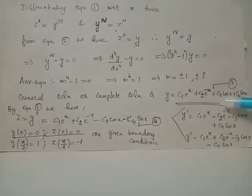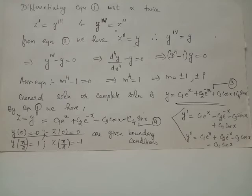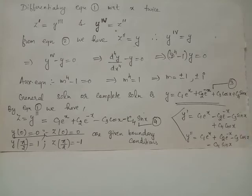From this expression of y, taking the derivative on both sides gives y dash equals c1 e raised to x minus c2 e raised to negative x minus c3 sin x plus c4 cos x. Differentiating again gives y double dash equals c1 e raised to x plus c2 e raised to negative x minus c3 cos x minus c4 sin x. Using equation 1, z equals y double dash equals this same expression.